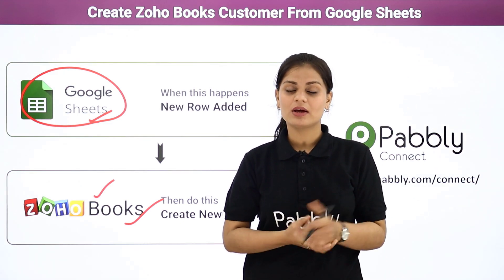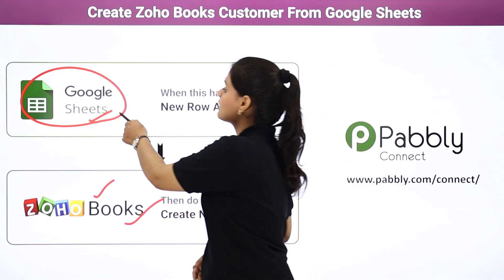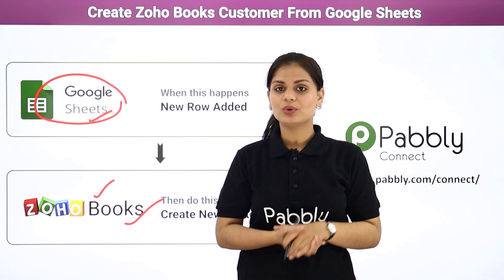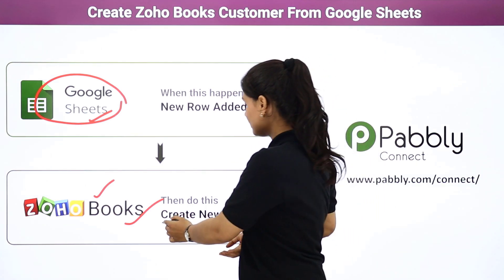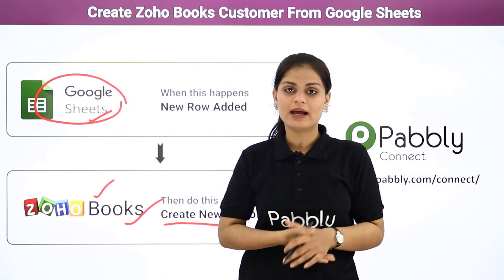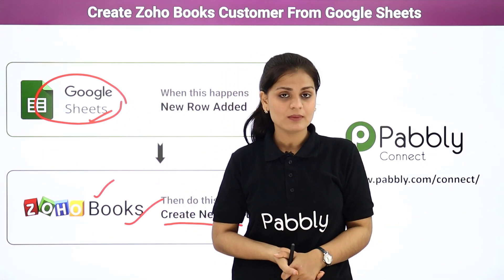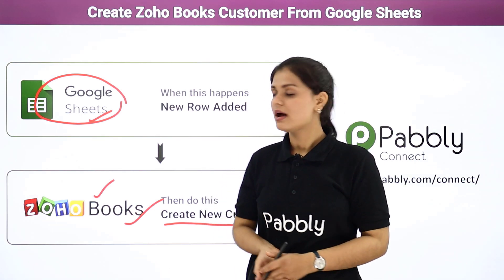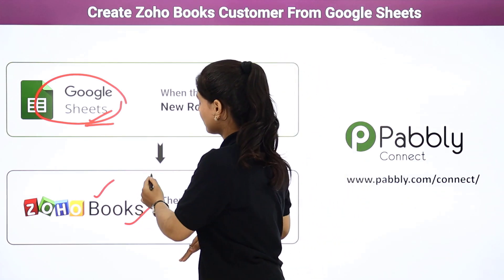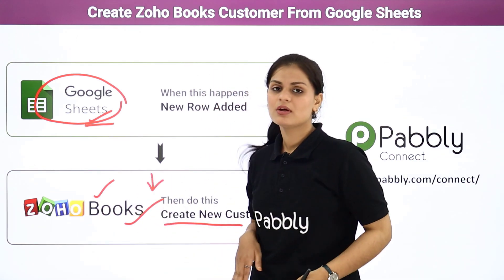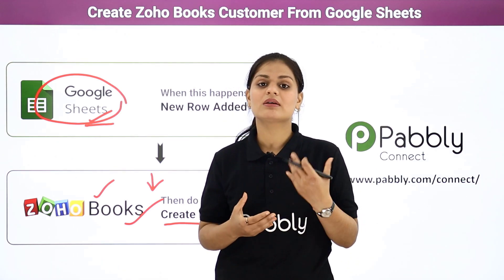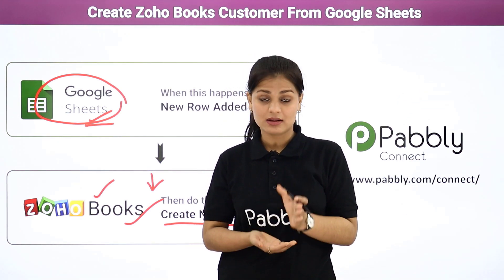Let's suppose I am a business person and I get details of various persons into my Google Sheets from different sources. What I want to do is create customers into my Zoho Books account from the same data available in my Google Sheets. Here I'll have two choices. The first one is to collect all the details from Google Sheets and then manually create a customer in Zoho Books. But what if I want to create multiple customers at the same time? It is going to increase manual work and it is very tiresome.